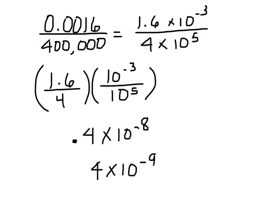In this one, I've got to make both of these in scientific notation form. This becomes 1, 2, 3 — 1.6 times 10 to the negative 3rd, and this becomes 1, 2, 3, 4, 5 — 4 times 10 to the 5th. So I'm going to divide 1.6 divided by 4, which is 0.4.